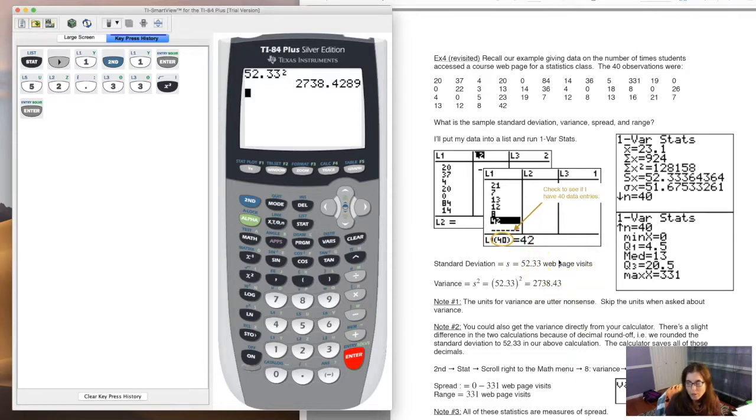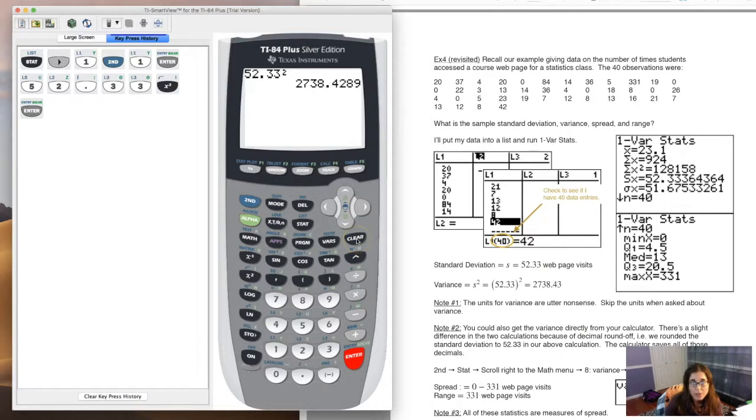Technically the units on this are web page visits squared, but those units just don't make sense in the real world, so I don't write them. Because ultimately we are only finding variance to get to standard deviation, so this is the real number that we want. Now there's a different way if you want to get your variance. Let me show you this other option. I'm going to clear this out so we have a new calculation screen.